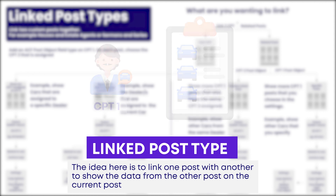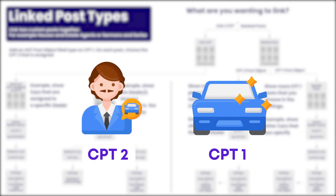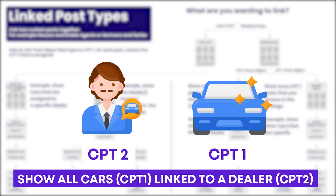We're going to kick off with linked post types. The idea with the linked post type is to link one post with another post to show the data from the other post on the current post. There are two ways to do this. We have one post type assigned to another post type — let's call them cars for custom post type one and dealerships for custom post type two. You can show all custom post type ones that are linked to custom post type two. In this example, our cars are the many and our dealership is the one — a one-to-many relationship.